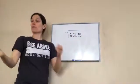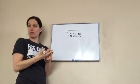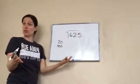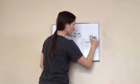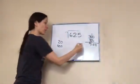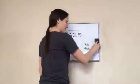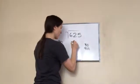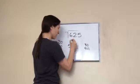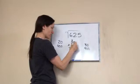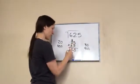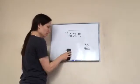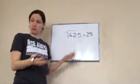Square root of 625. From previous numbers we know it's at least 20, because 20 times 20 is 400. Let's jump to 30: 30 times 30 is 900 — too high. So we need something between 20 and 30, like 25. 25 times 25 is 625. So the square root of 625 equals 25.